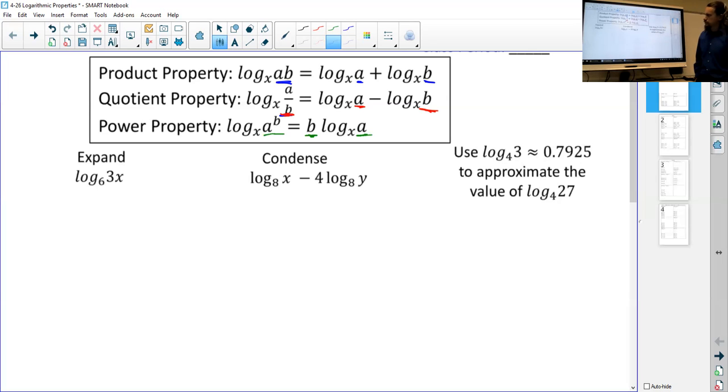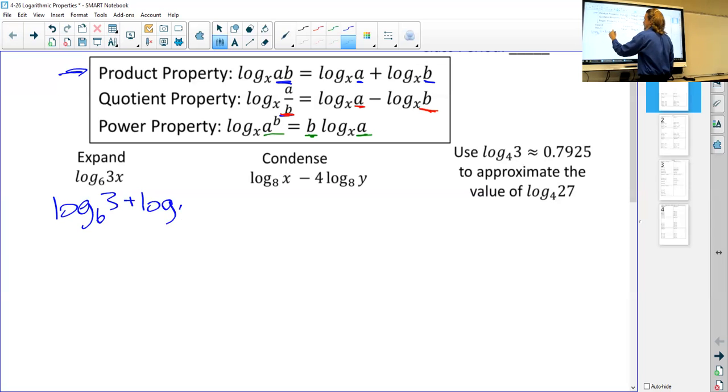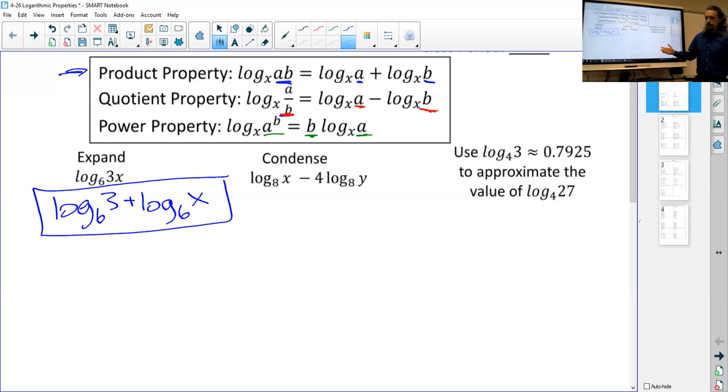So if we say expand log base six of three x, so I see three times x. So I know I'm looking at this first property, products. So I'm going to rewrite this, I'm going to separate the three and the x into two separate logarithmic expressions. I'm going to log, that's terrible. Let's try this again. I haven't written in three days. Log base six of three plus log base six of x. And then I box off, I'm done. That's it.